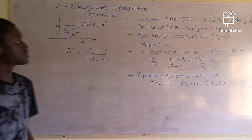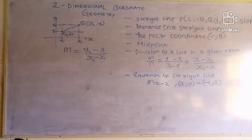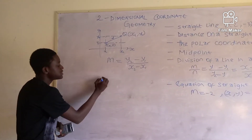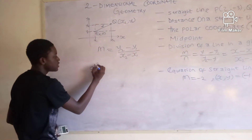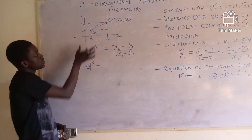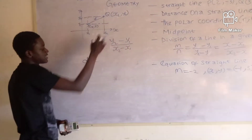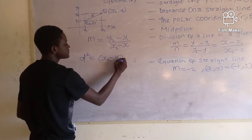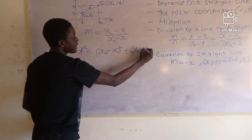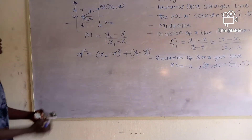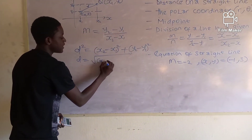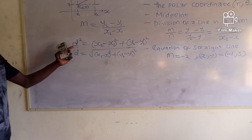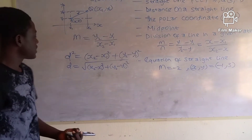Now for distance on a straight line: if we name this distance d, then d is the hypotenuse. By Pythagoras' theorem, d² = (x2 - x1)² + (y2 - y1)². Taking the square root of both sides, the distance formula is: d = √[(x2 - x1)² + (y2 - y1)²].